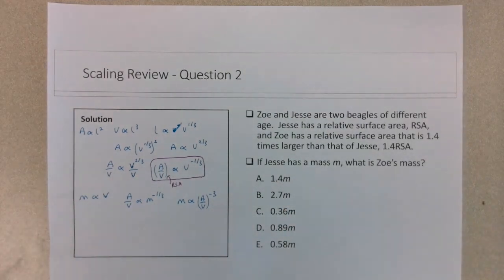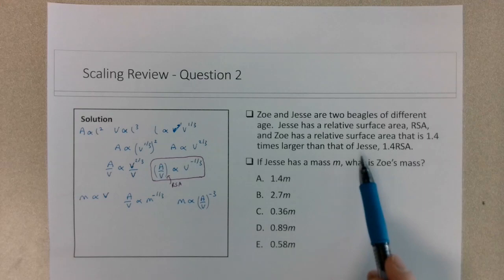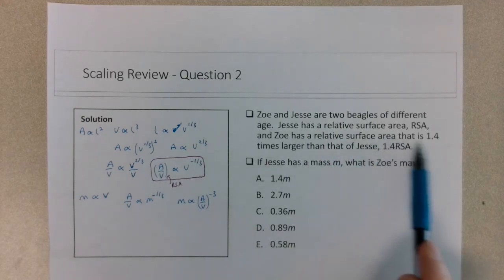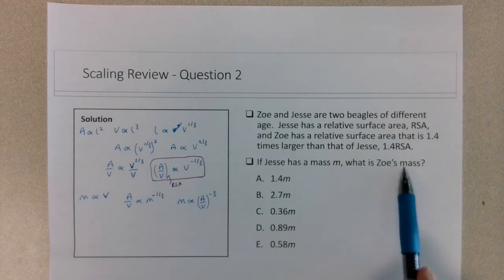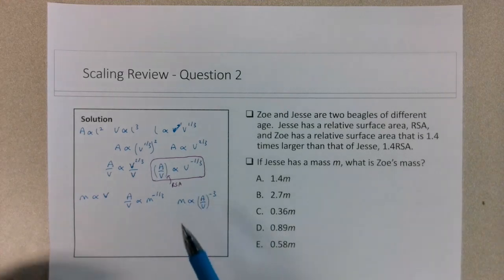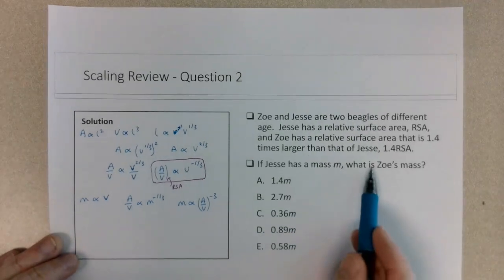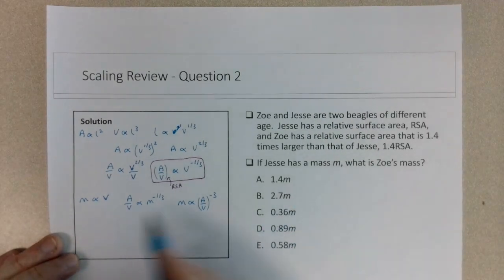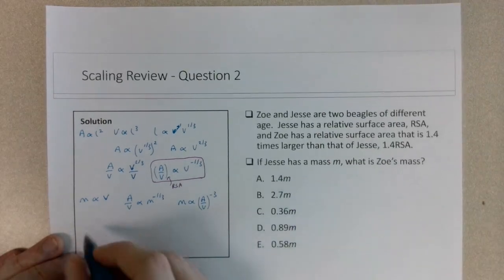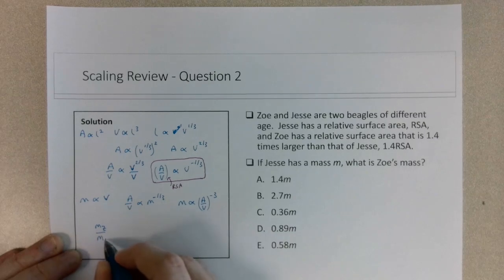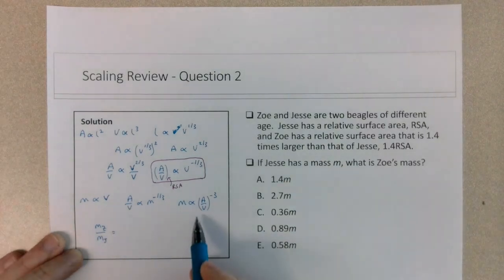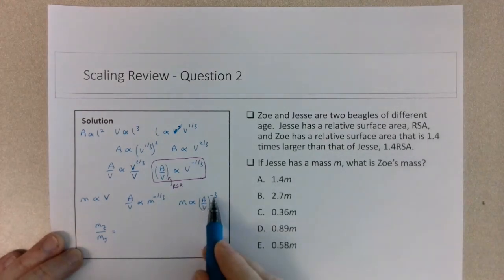And that's how we're going to solve this particular problem. So I know that the RSA of Zoe has a relative surface area that's 1.4 times larger than that of Jesse. And I'm interested in if Jesse's mass is M, what is Zoe's mass? So I'm going to set up a ratio here that's very similar using this expression. So I want to look for the mass of Zoe in terms of Jesse's mass. So if I set up a ratio, the mass of Zoe over the mass of Jesse will be equivalent to the ratio of the relative surface area raised to the negative third power.